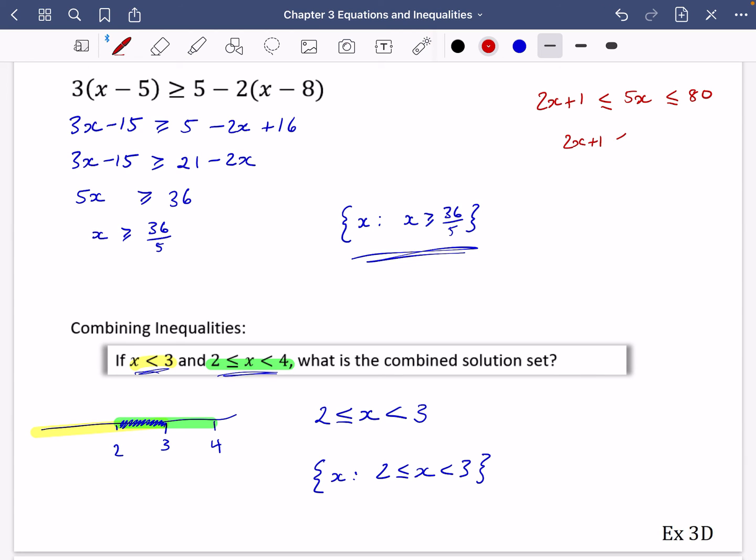Sorry. So you'd have your two X plus one is less than or equal to five X. So then we're going to deal with the other bit afterwards. So I'll subtract two X from both sides. So I get this. So I get that X is greater than a third.